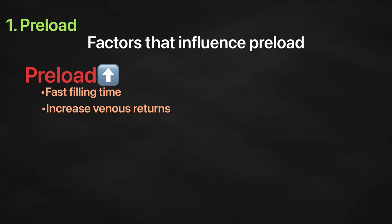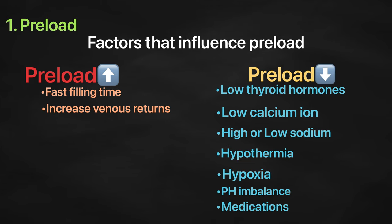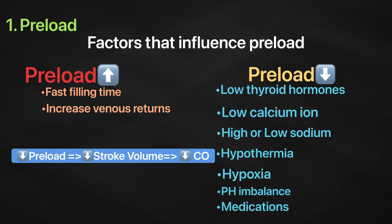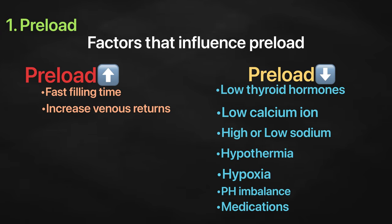On the other hand, preload decreases due to one or more of these factors: decreased thyroid hormones, decreased calcium ion, high or low sodium, low body temperature, hypoxia, abnormal pH balance, or some medicines or drugs like calcium channel blockers that can decrease heart rate. As you can see, all of these factors that can decrease preload can also directly affect the heart rate, heart contractions, and venous return because cardiac output determinants are interrelated and you cannot rule out other variables without affecting the others.